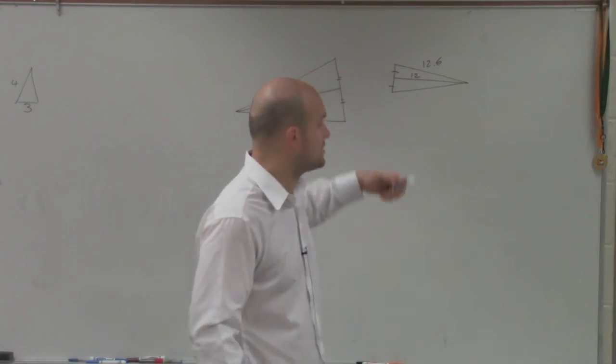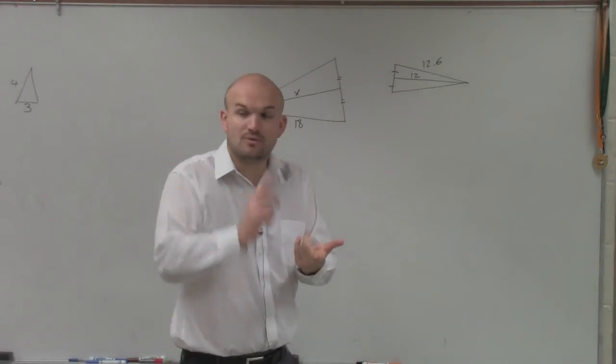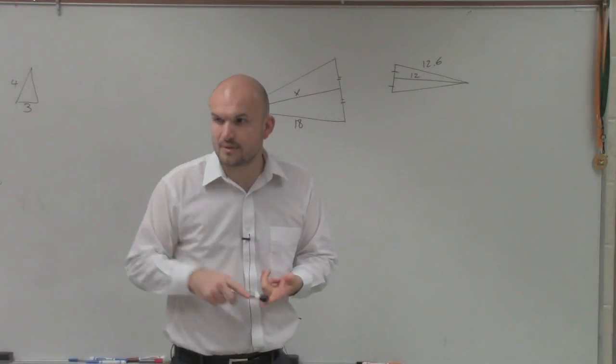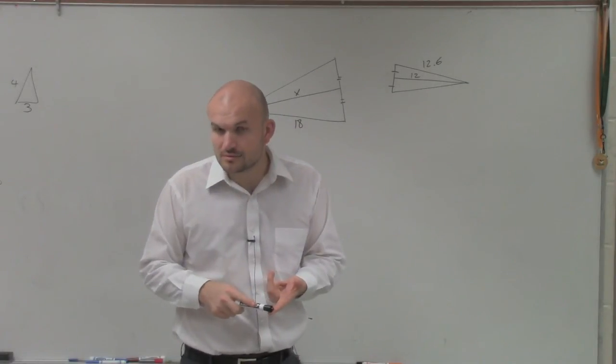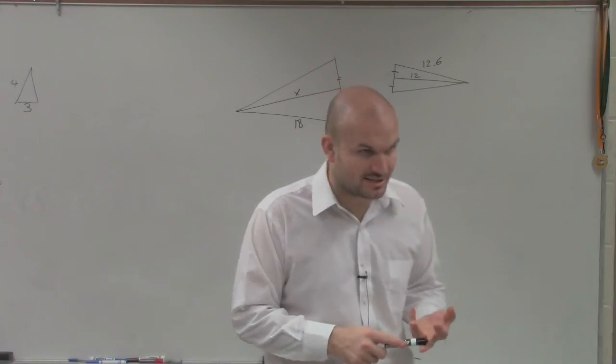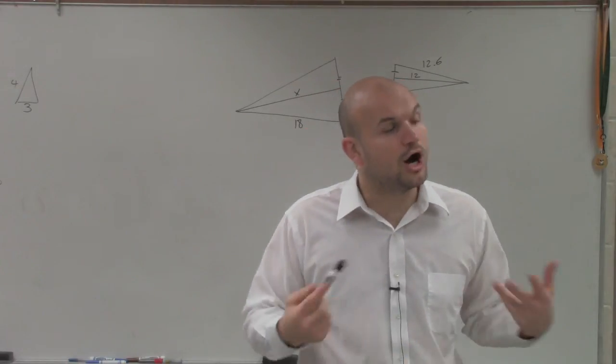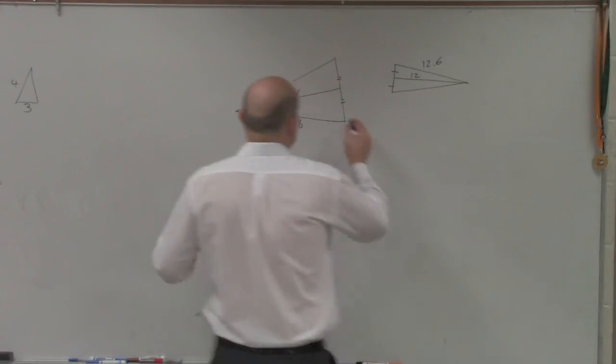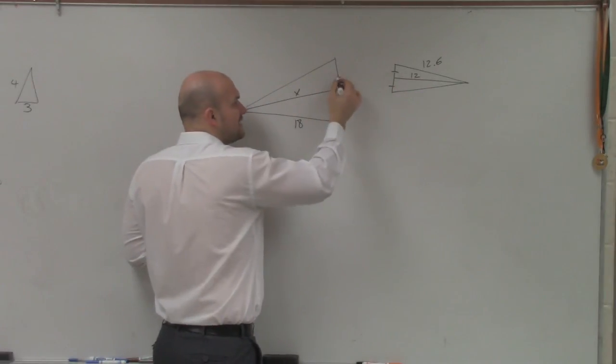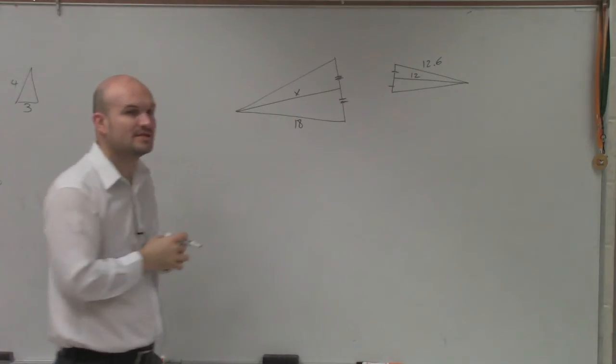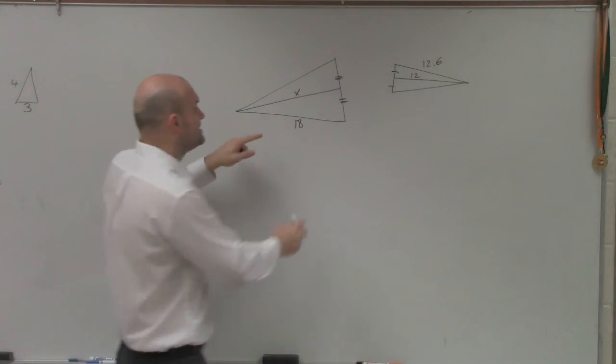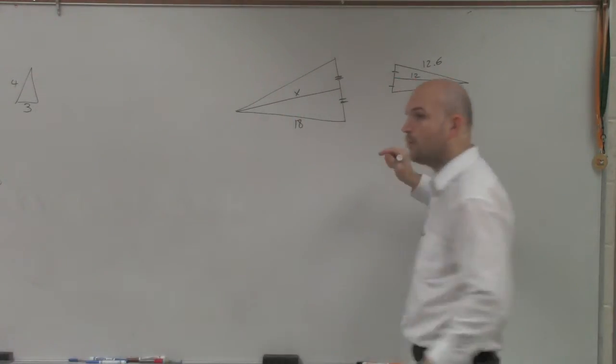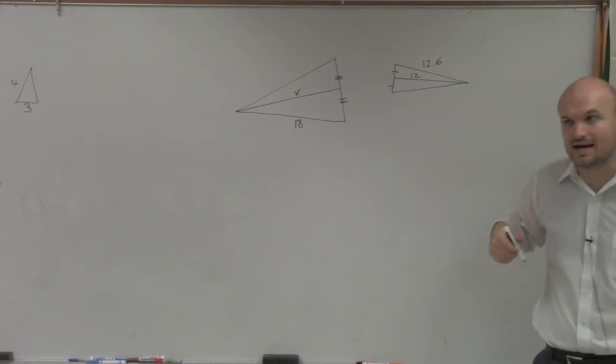Now, in this case, what we have is our special segments, which we talked about - the median, the angle bisector, and the altitude - are also proportional to the side lengths. So I look at this and I see here is this line that has been cutting this line in half. Therefore, that's dealing with the median. So what that tells me is these two lengths are proportional to the proportion of the sides.